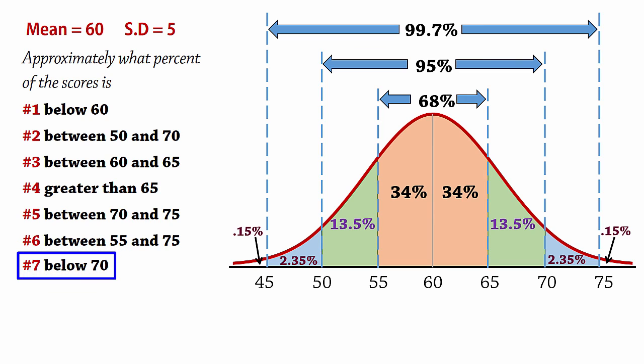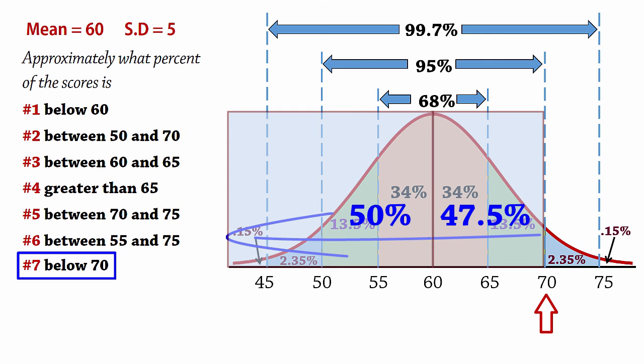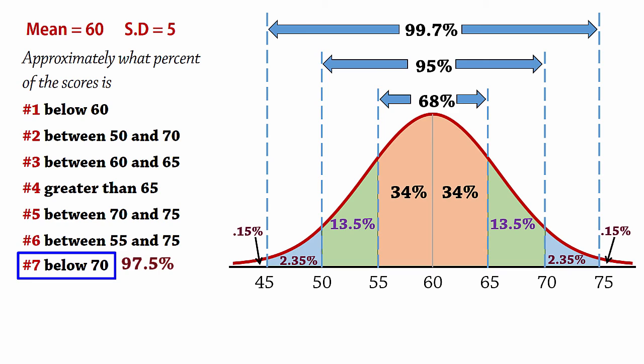Finally, for number 7, the percent below 70 is 47.5% plus 50%, which gives 97.5%. We can obtain the same result by adding 2.35% and 0.15% and subtracting from 100%. That concludes this video. Thanks for watching.